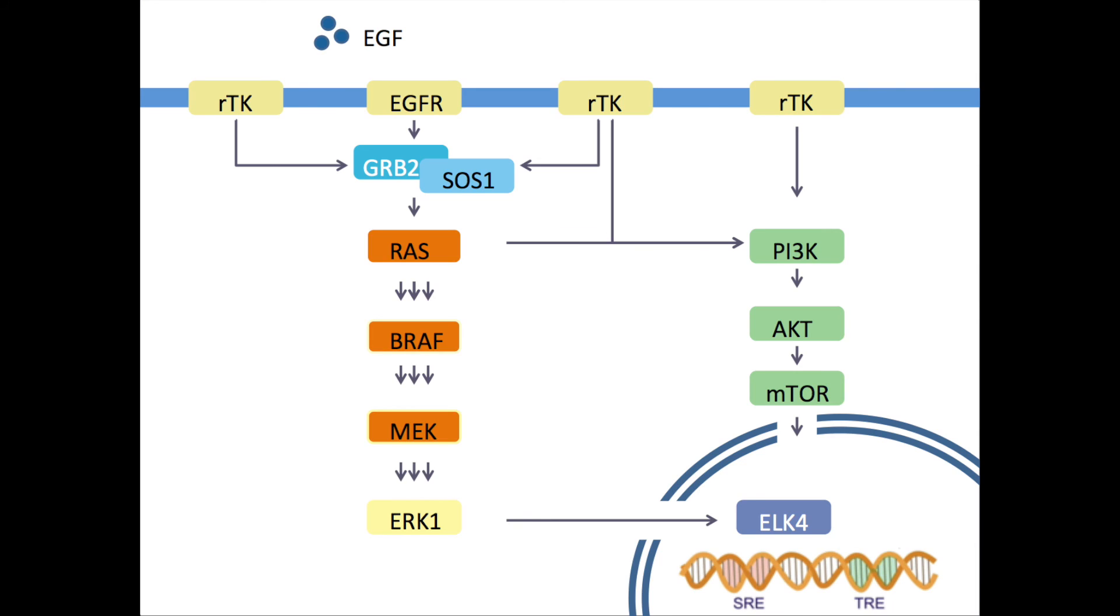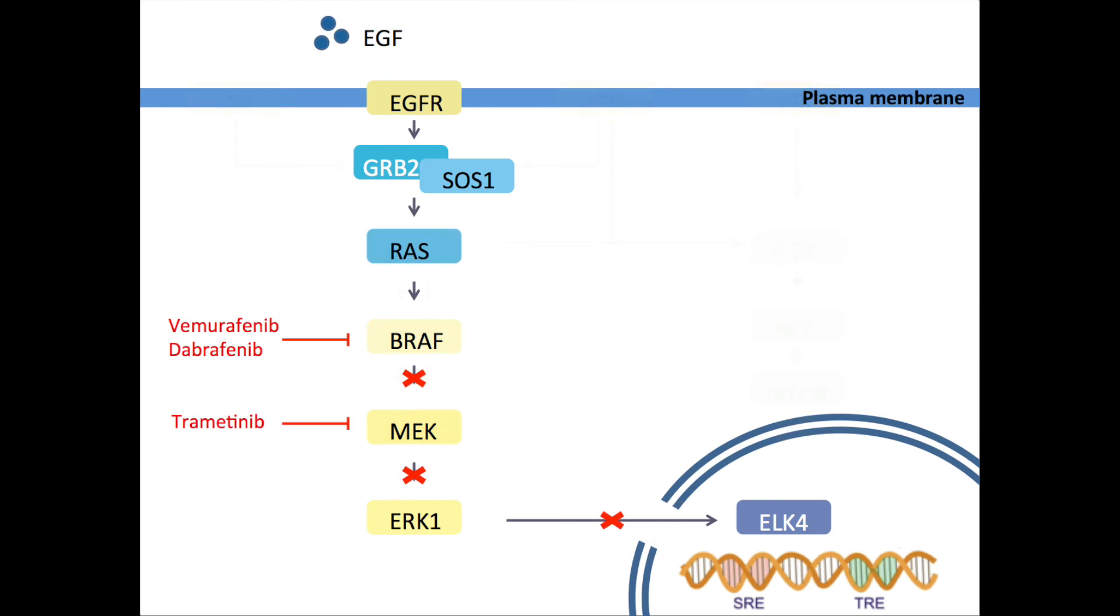Because resistance is such a big problem in the treatment of melanoma, clinical research is now focused on combination therapy. This way, multiple proteins in the signaling pathway can be inhibited, making the chance of acquiring resistance smaller. The combination of BRAF inhibitors and MEK inhibitors has shown significant improvement in overall survival and progression-free survival, in addition to less side effects. This is because MEK inhibitors diminish the paradoxical MEK activation that BRAF inhibitors cause.